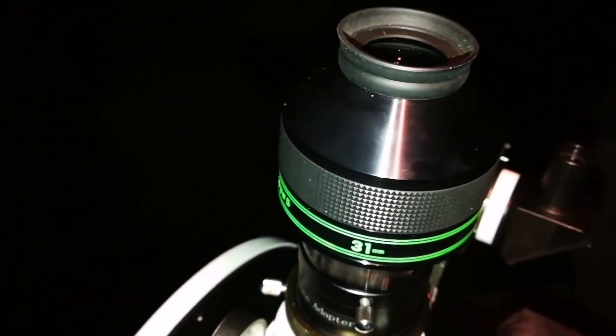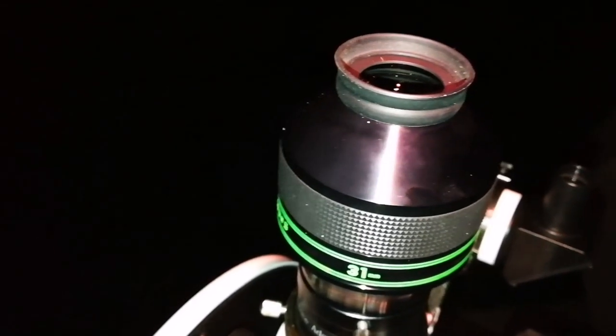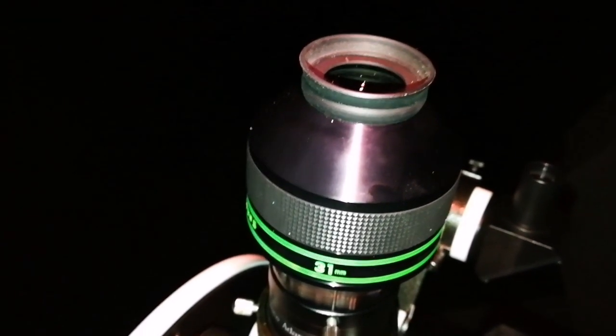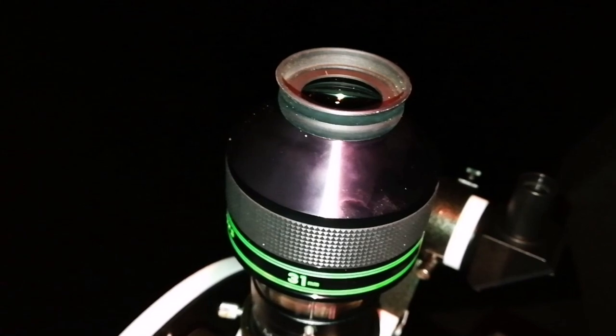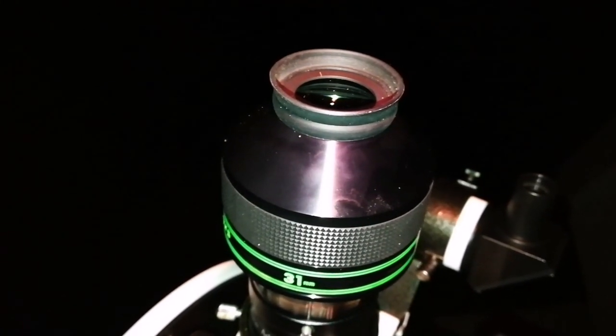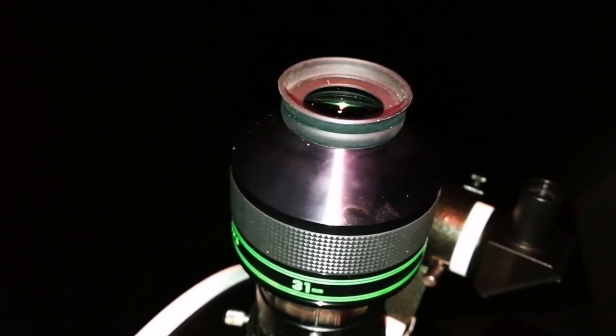The Baader oxygen-III filter shows the glow of the nebula very well. Actually, I can see the eastern part and western part. It's quite huge. You can see it's roundish.